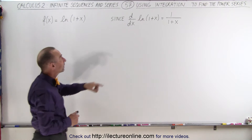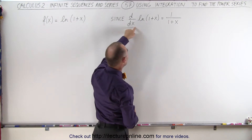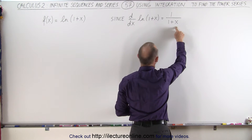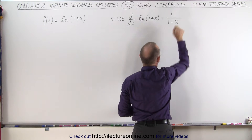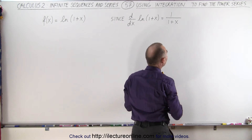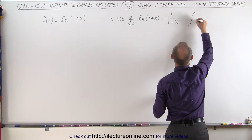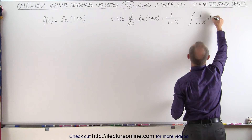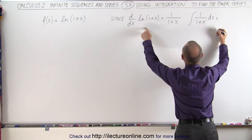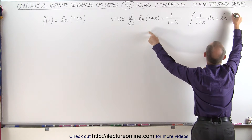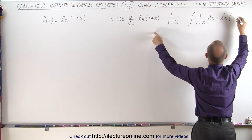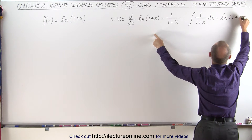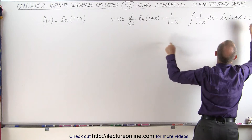Since we know that the derivative with respect to x of the natural log of 1 plus x is equal to 1 over 1 plus x, we can then say that the integral of 1 over 1 plus x dx is equal to the natural log of the absolute value of 1 plus x plus a constant of integration.